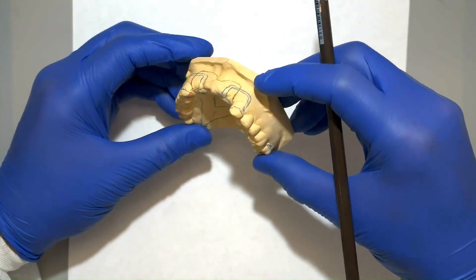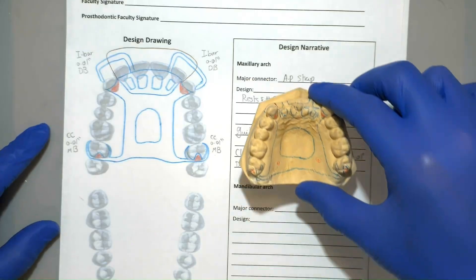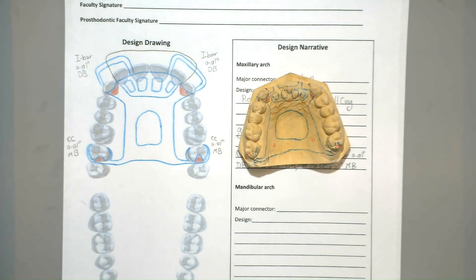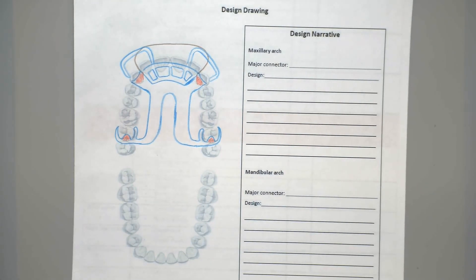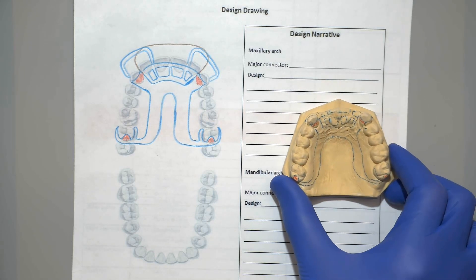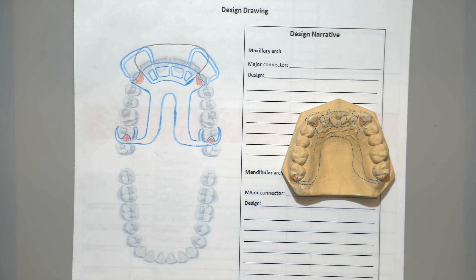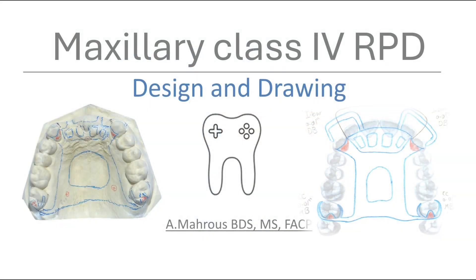And with that your design and drawing are complete. It's also worth noting that an alternative design is possible with a horseshoe, which is also acceptable. That brings us to the end of the tutorial. We hope it was helpful and we'll see you on the next video.